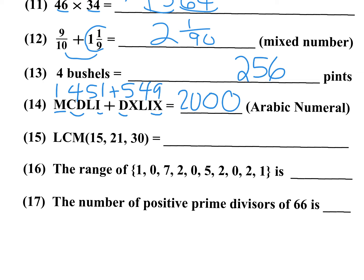Number 15: What is the LCM for 15, 21, and 30? 15 goes into 30, so you don't need that. For 21 and 30, 3 goes into both — divide by 3, the greatest common factor. 21 times 10 is 210, and that is your LCM for those three numbers. Number 16: the range is the high minus the low. The lowest is zero and the highest is seven — seven minus zero gives seven.